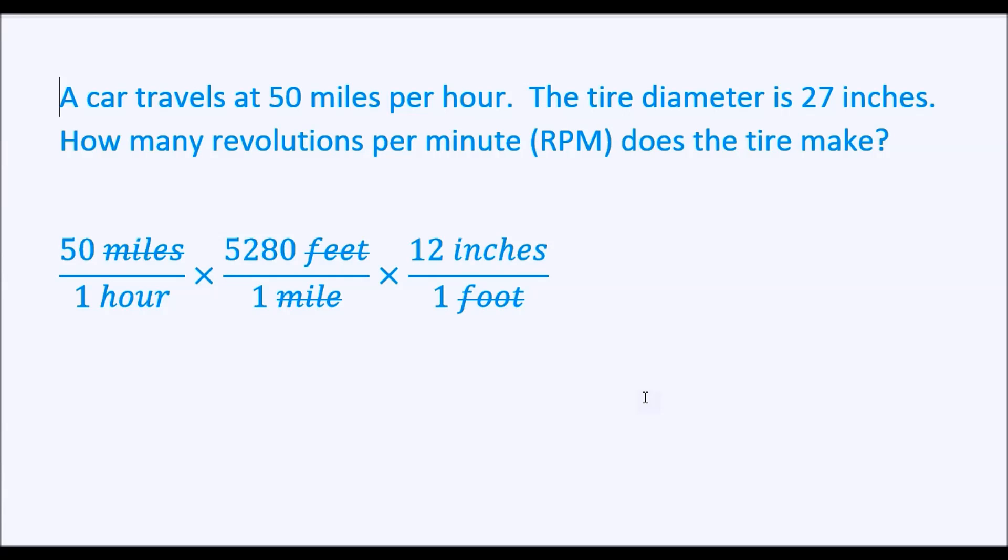Let's start now getting revolutions. We know that the tire has a diameter of 27 inches. And the circumference would be pi d, pi times 27. So every time the car moves pi d inches, the tire makes one revolution.